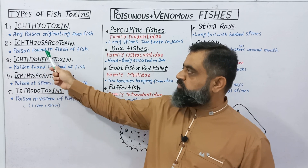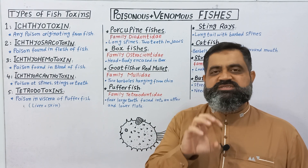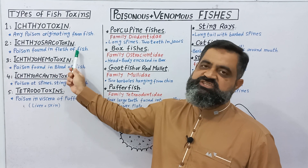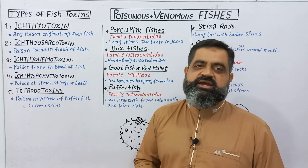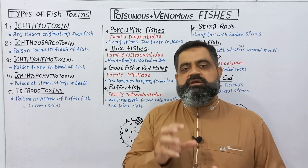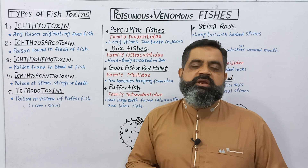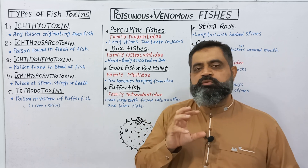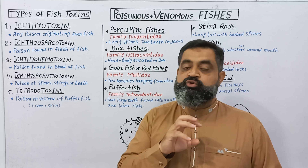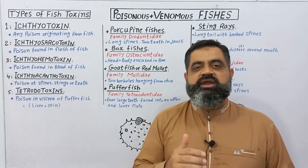The second type of toxin is Ichthyosarcotoxin. Ichthyo means fish, sarco means muscles, toxin means poison. Such type of poison is found in the flesh of fish. This type of toxin is present in the muscles, and when you try to eat the meat or flesh of the fish, the poison enters your body. Unfortunately, your body does not have the enzymes to digest those poisons, and these poisons can harm your body and even kill you.